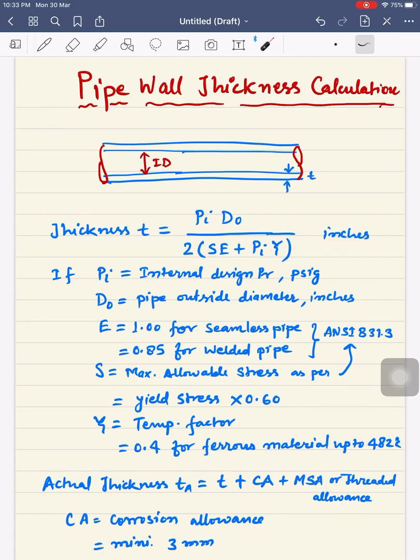Pi is internal design pressure in psig. Do is outside pipe diameter in inches. E is the welding efficiency or joint efficiency. For seamless pipe, you can use E value of 1.00, and for welded pipe, you can use E value of 0.85.